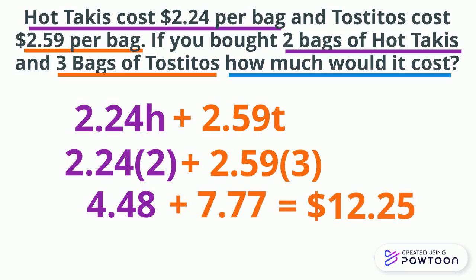Adding those together gives us a total of $12.25. To summarize: when writing algebraic expressions, look for the rate that goes with the variable, and the starting amount is the constant. Substitute a value for the variable to evaluate and find your answer. Thanks for watching — peace out!